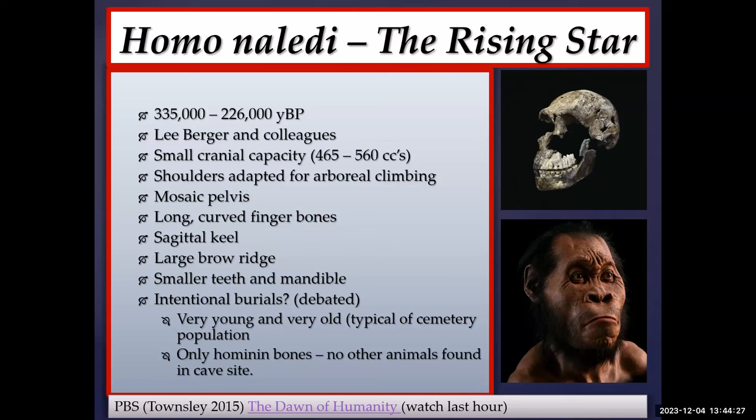The intentional burial debate is still very active. Lee Berger and colleagues think the evidence supports it because you see the very young and the very old — typical of a cemetery population — and most remains are actually children. There are also claims of a ritualistic pattern to the burial. They would have had to deliberately reach this cave site, as parts of the cave have openings only about seven inches wide. During the original 2015 expedition they hired a team of six women called the 'underground astronauts' — trained in paleoanthropology and physically small enough to get through the crevices.